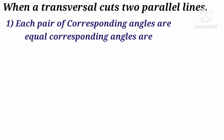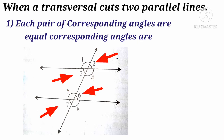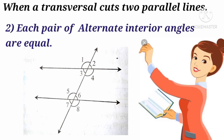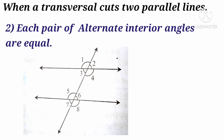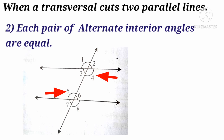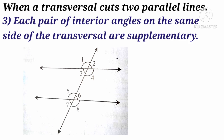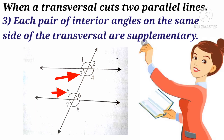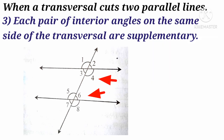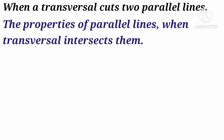First: each pair of corresponding angles are equal. Angle 1 equals angle 5, angle 2 equals angle 6, angle 3 equals angle 7, angle 4 equals angle 8. Second: each pair of alternate interior angles are equal. Angle 3 equals angle 5. Third: each pair of interior angles on the same side of the transversal are supplementary. Angle 3 plus angle 5 equals 180 degrees. Angle 4 plus angle 6 equals 180 degrees. These are the properties of parallel lines when a transversal intersects them.